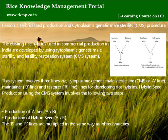Hybrid seed production using the CMS system involves the following two steps: production of A-Line (A multiplied by B), and production of hybrid seed (A multiplied by R).